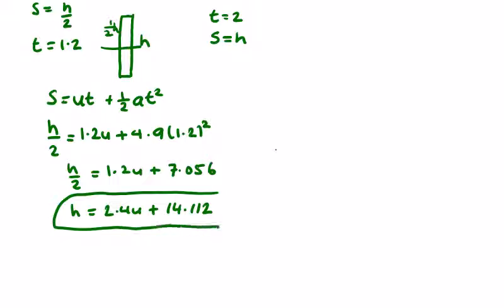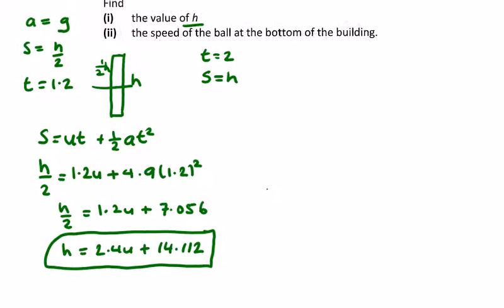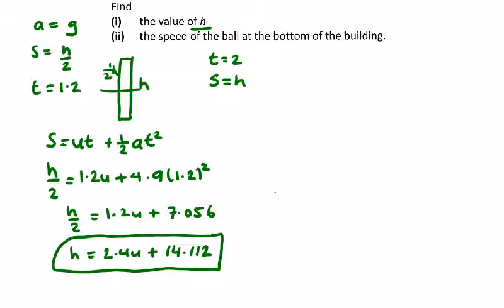From the other variables, we should be able to form a second equation in h and u. So here we have again s equals ut plus half at squared. The distance is h...